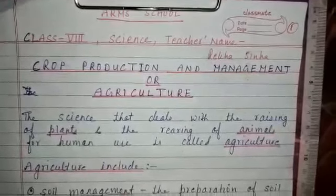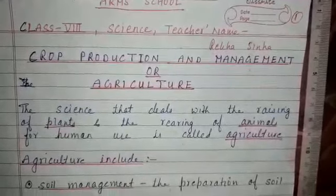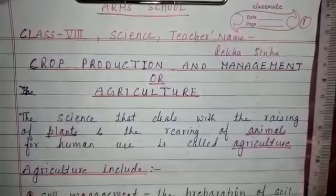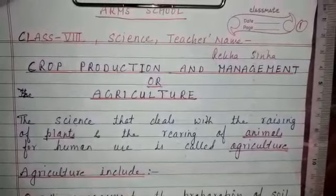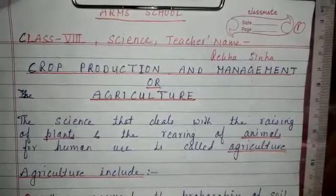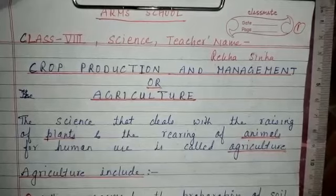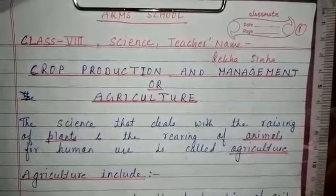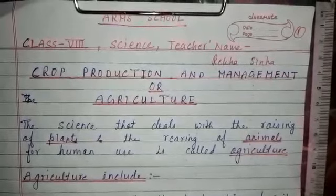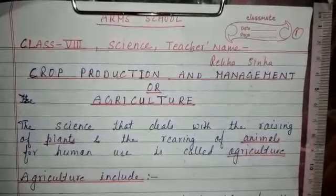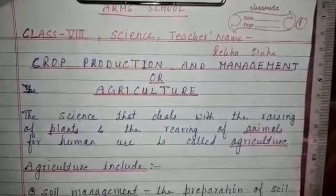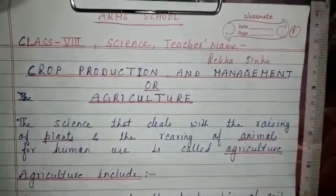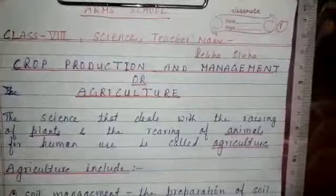What is agriculture? The science that deals with raising of plants and the rearing of animals for human use is called agriculture. Agriculture is important due to our large population, because every person should get enough food for survival.